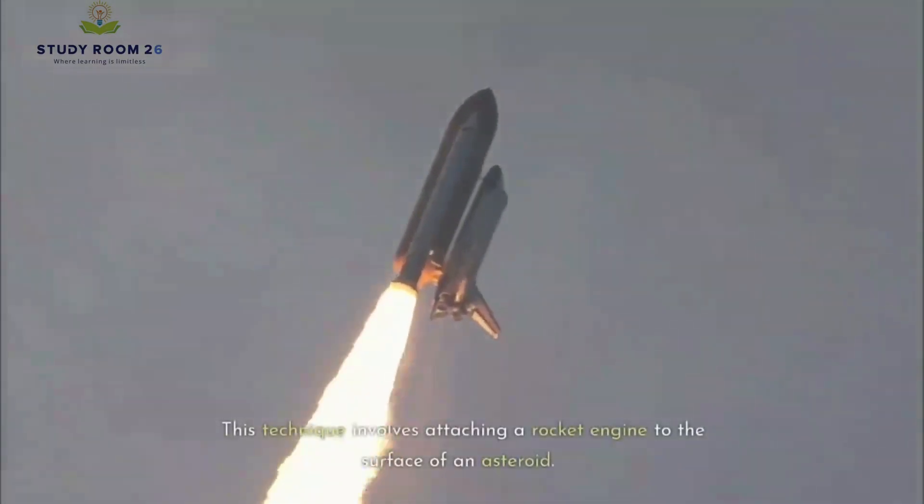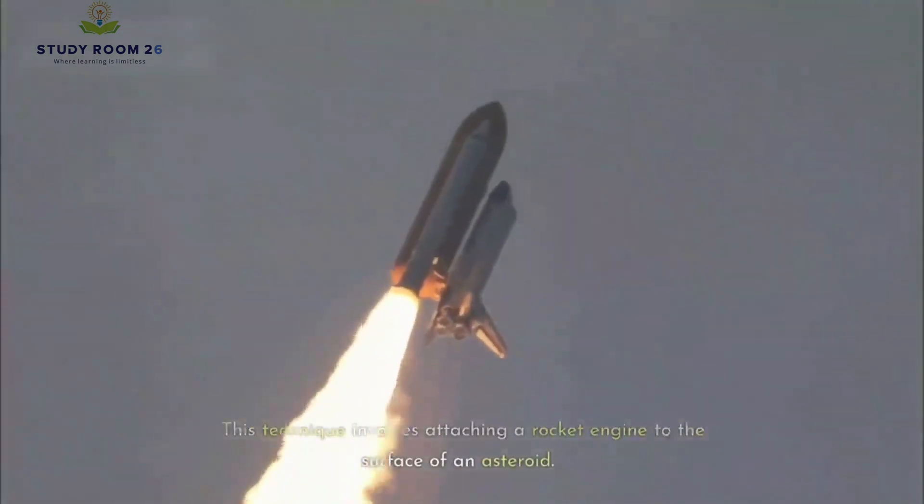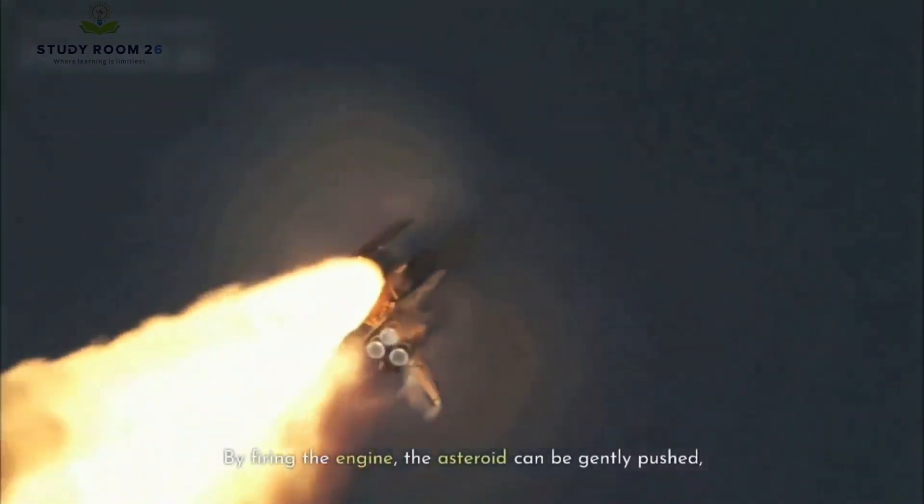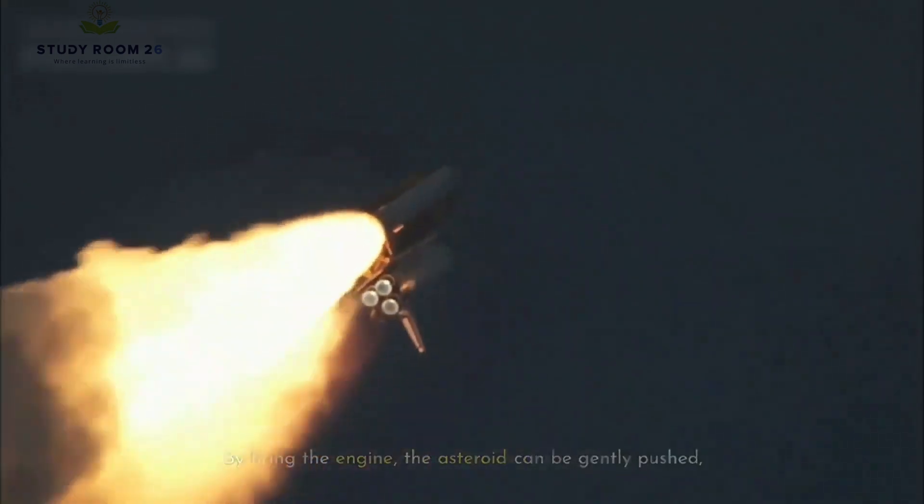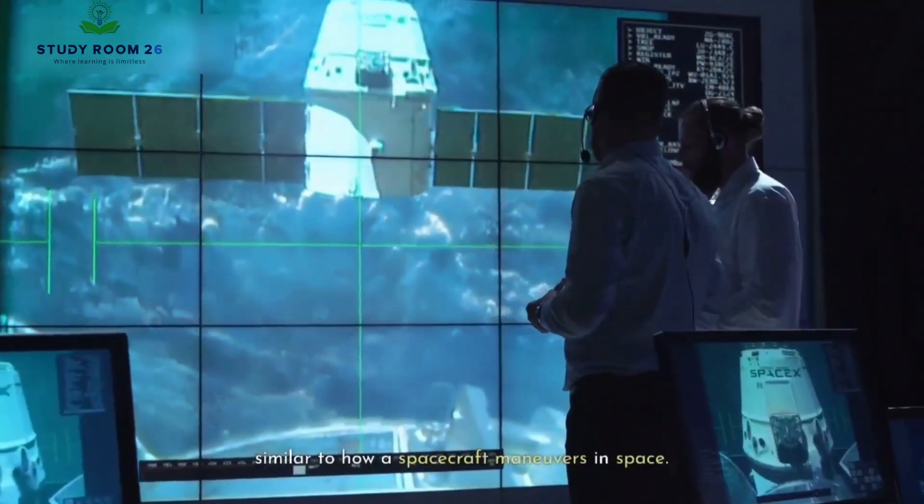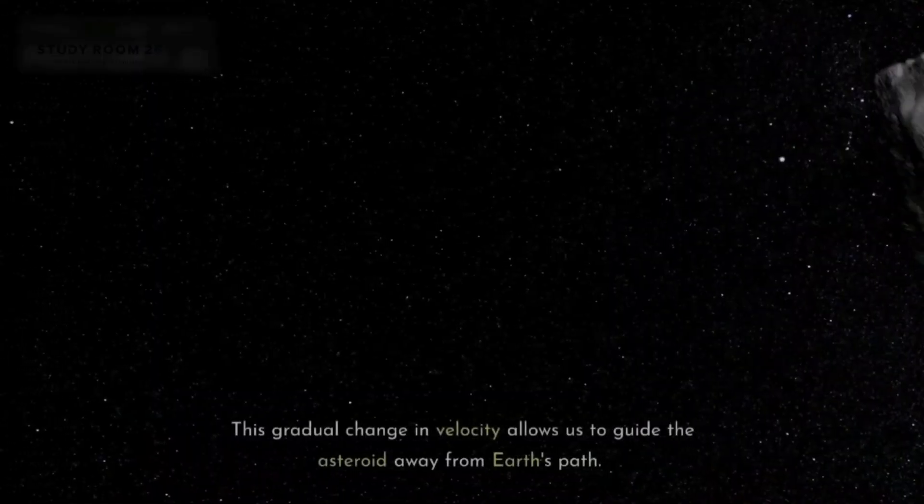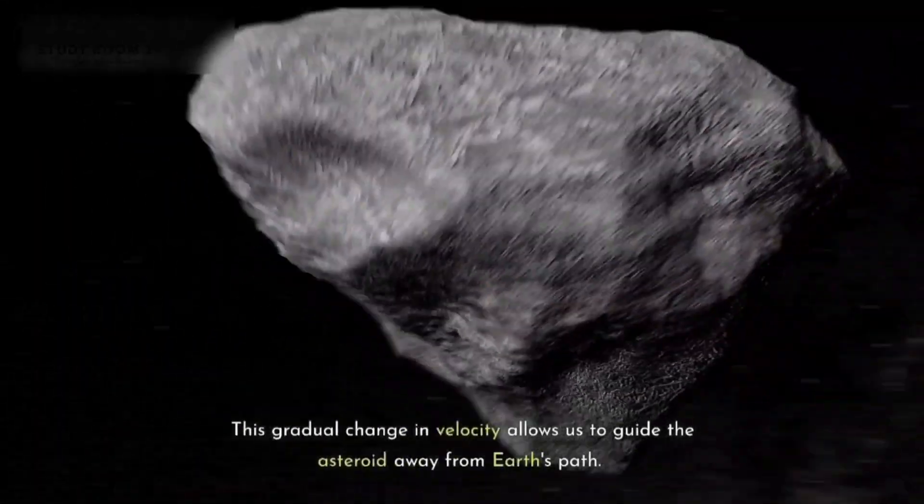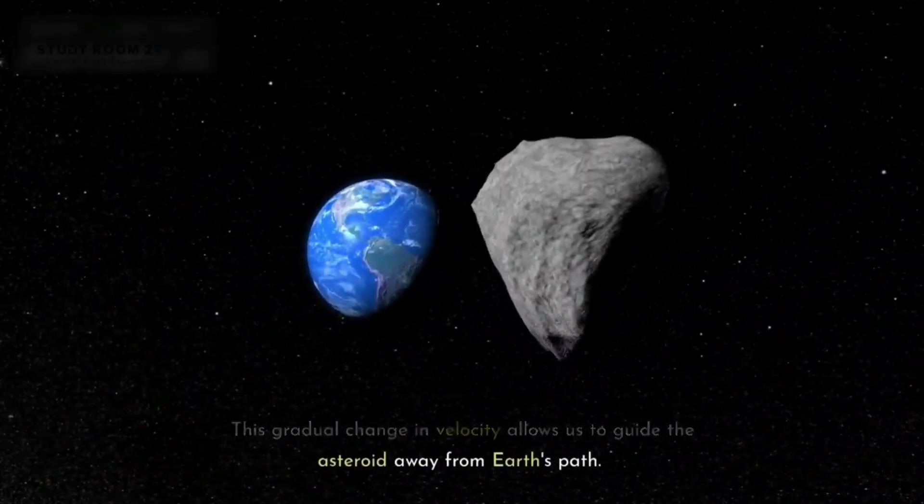This technique involves attaching a rocket engine to the surface of an asteroid. By firing the engine, the asteroid can be gently pushed, similar to how a spacecraft maneuvers in space. This gradual change in velocity allows us to guide the asteroid away from Earth's path.